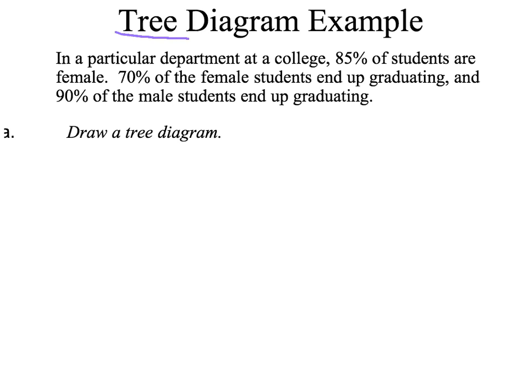Here's a tree diagram example: in a particular department at a college, 85% of students are female, 70% of the female students end up graduating, and 90% of the male students end up graduating. You start off with your population — everybody — and then split it into male and female. Since 85% are female, I'm going to write 0.85 on that branch. And of course, everybody is either male or female, so I'll put 0.15 on the other branch.